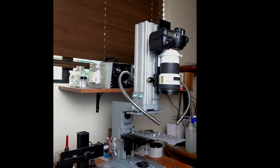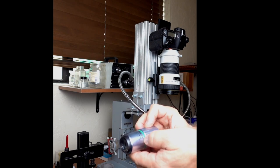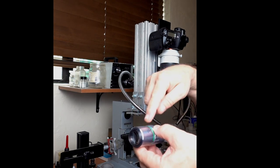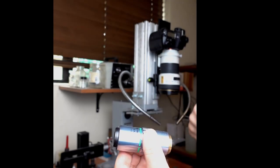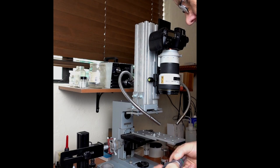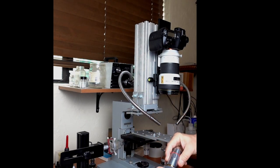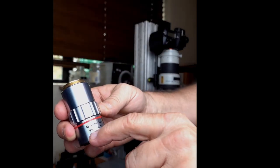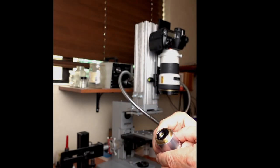I use these Mitutoyo objectives. They're industrial objectives. This one's a 20 power and it's also an APO, and it's an M plan. It's an infinity-focusing objective. It says F200 on it, which means it wants a 200 millimeter tube lens, which is why I've set the telephoto to 200. I also have a five-power. It's also an M plan APO, infinity-focus, 200 millimeter, and it's five-power with a numerical aperture of 0.14. Both of these are threaded the same.